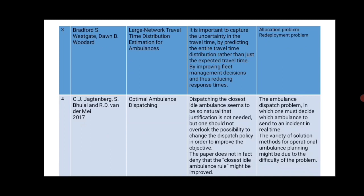Another paper by Dr. C.J.J. Ben Burke, Bulli and R.D. Van Dermay is on the topic of optimal ambulance dispatching. Dispatching the closest available ambulance seems so natural that justification is not needed, but one should not overlook the possibility of changing the dispatch policy to improve the objective. The demerit is the ambulance dispatch problem of deciding which ambulance to send to an incident in real time, and the difficulty of processing the ambulance planning.